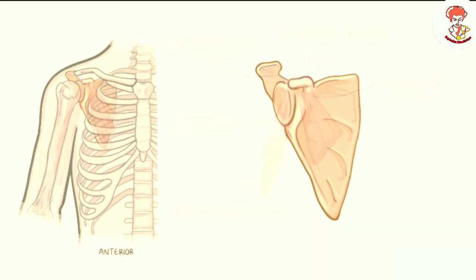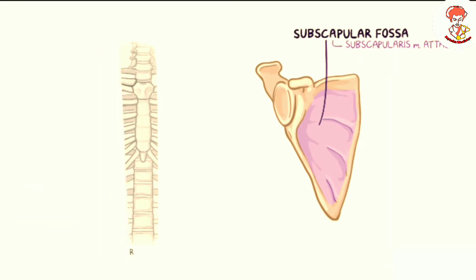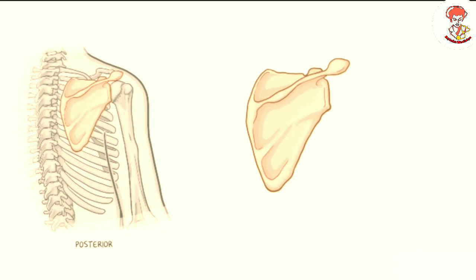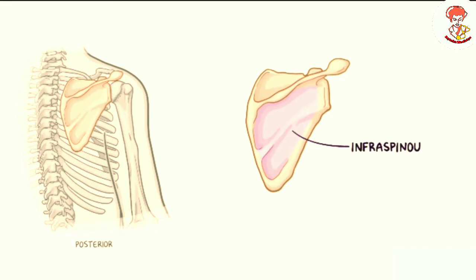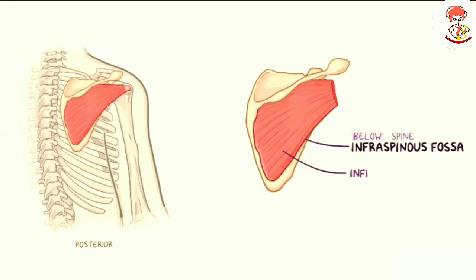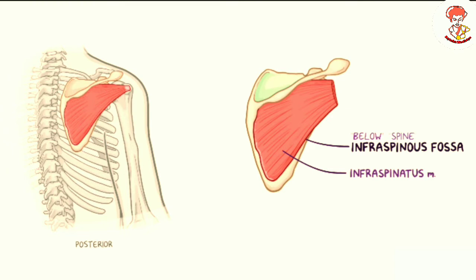The anterior surface of the scapula has a wide depression called the subscapular fossa, which is where the subscapularis muscle attaches. If we flip the scapula over, we can see its posterior surface. Below the superior border there is a prominent ridge of bone called the spine of the scapula, which becomes broader as it extends laterally to give rise to the acromion process, or simply the acromion. The surface below the spine of the scapula is called the infraspinous fossa, where 'infra' means below and 'spinous' refers to the spine of the scapula. This is where the infraspinatus muscle attaches.